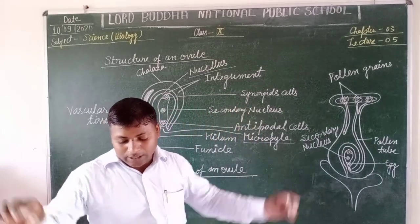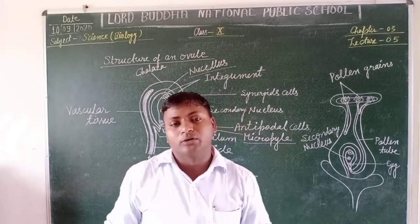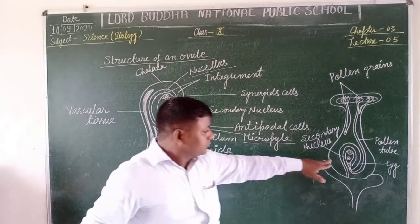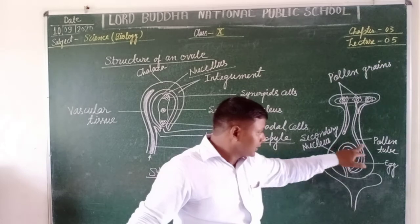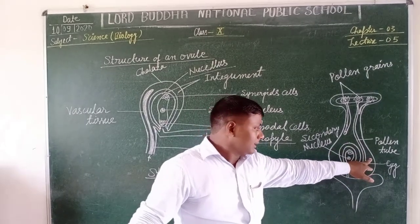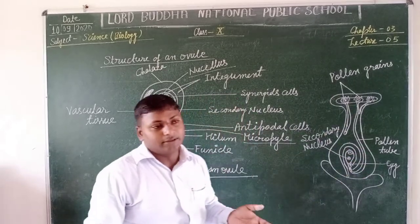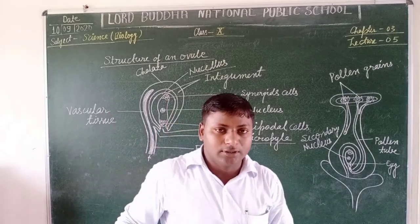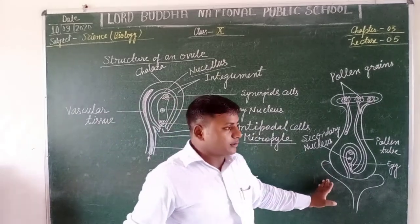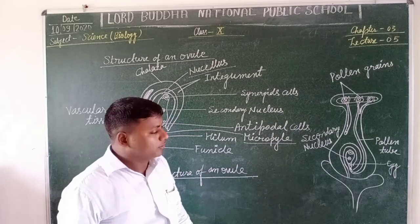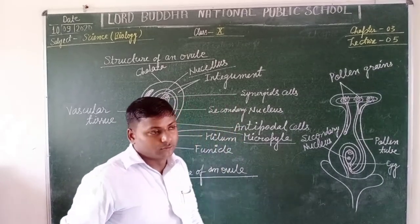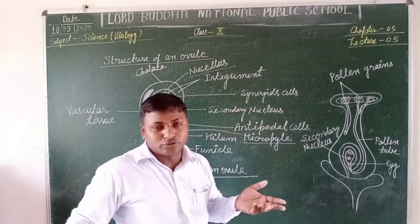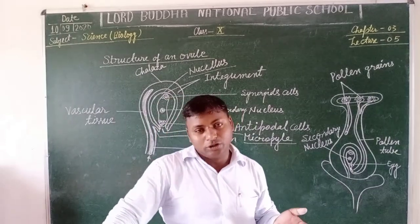After fertilization — the fusion of male and female gametes — the ovules get converted into seeds and the ovary gets converted into the fruit. The endocarp of the ovule gets converted into the epicarp, which is the peel of the fruit. These changes take place in a flower and result in the formation of a fruit from a flowering plant. In the next video lecture, we will study about sexual reproduction in higher animals as well as reproduction in human beings. Thanks, students.